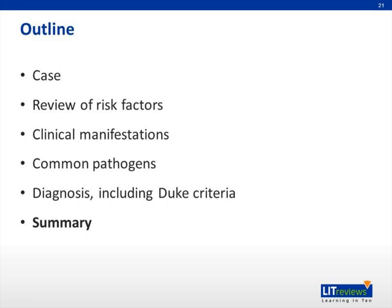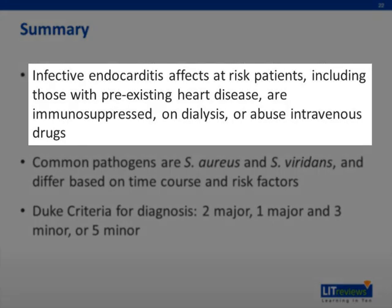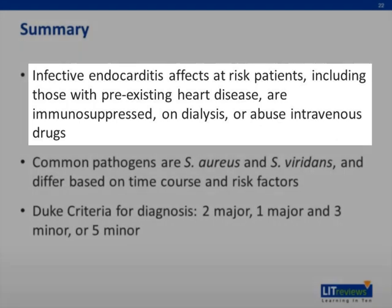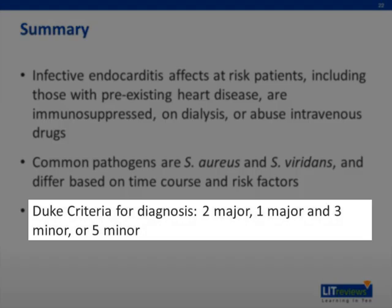Summary. Infective endocarditis affects at-risk patients, including those who have pre-existing heart disease, are immunosuppressed, on dialysis, or abuse IV drugs. Common pathogens are staph and strep, and differ based on time course and underlying risk factors. Duke's criteria for diagnosis include 2 major, 1 major and 3 minor, or 5 minor criteria.